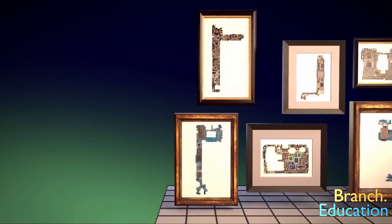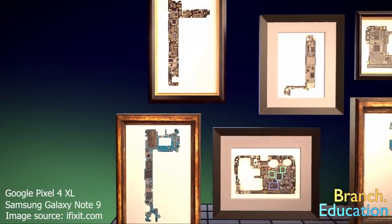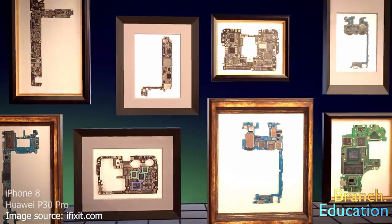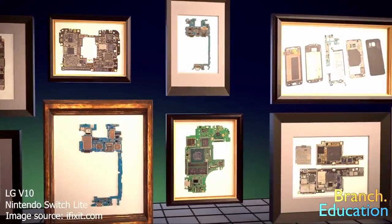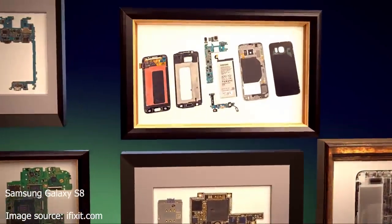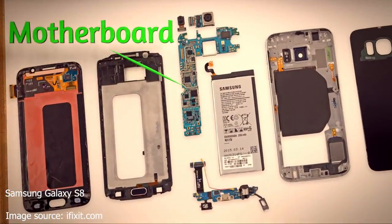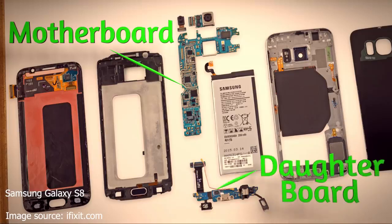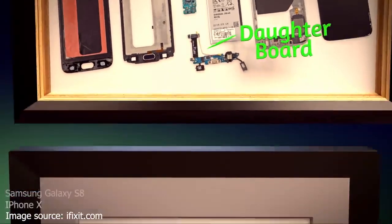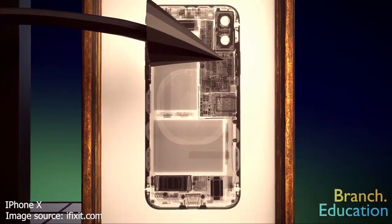Each model of smartphone is different in shape and specifications, and thus each has a different printed circuit board, which engineers carefully design. For example, some smartphones separate the top and bottom PCBs with the bigger one called the motherboard, and the smaller the daughterboard. Or for another example, some newer smartphones stack PCBs on top of one another in order to fit more space for a larger battery and more cameras.